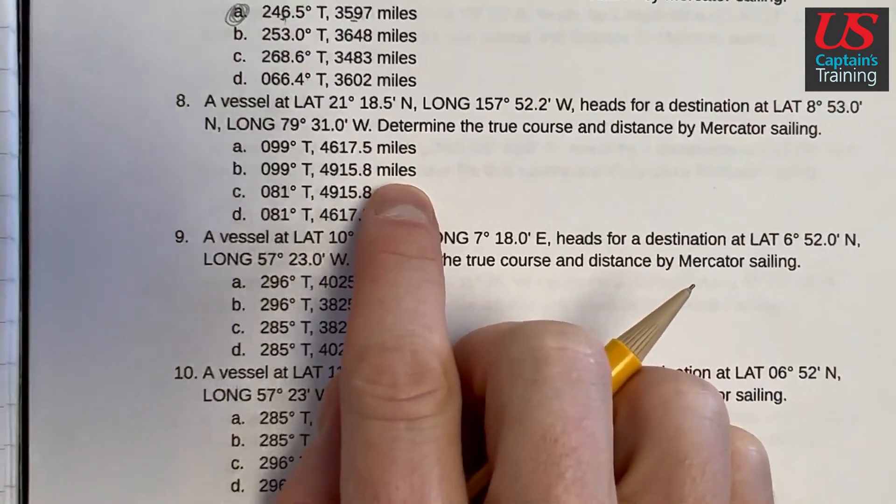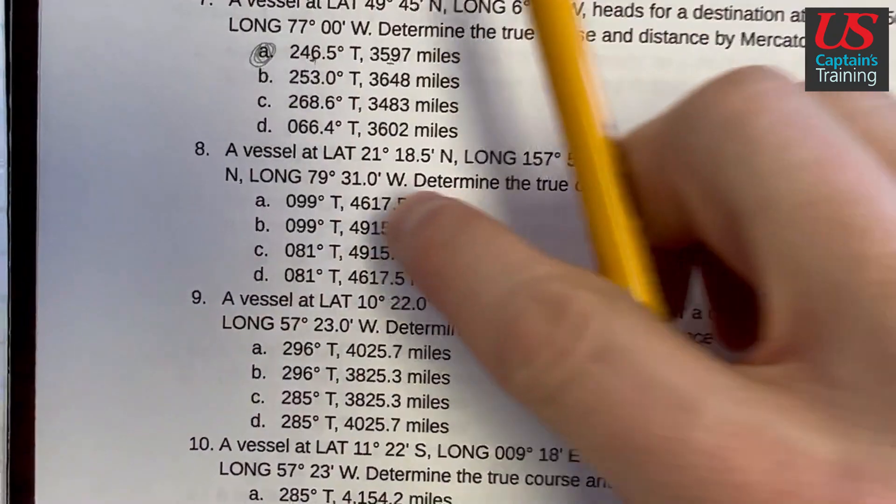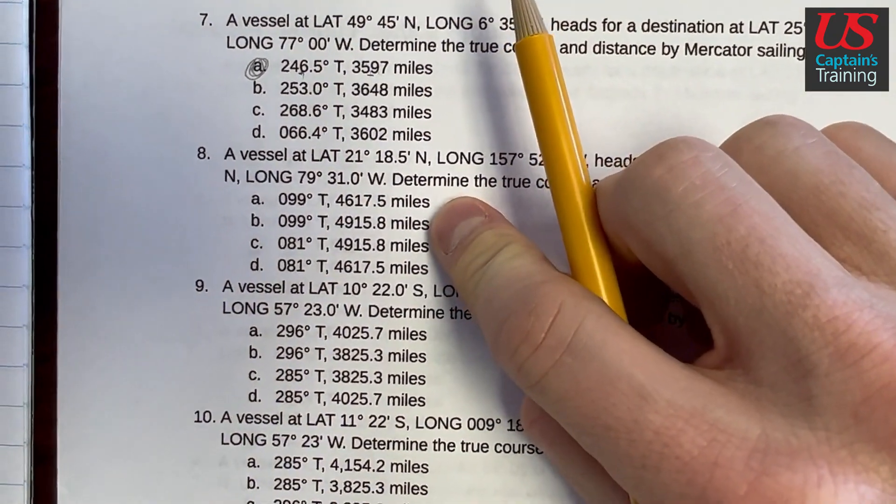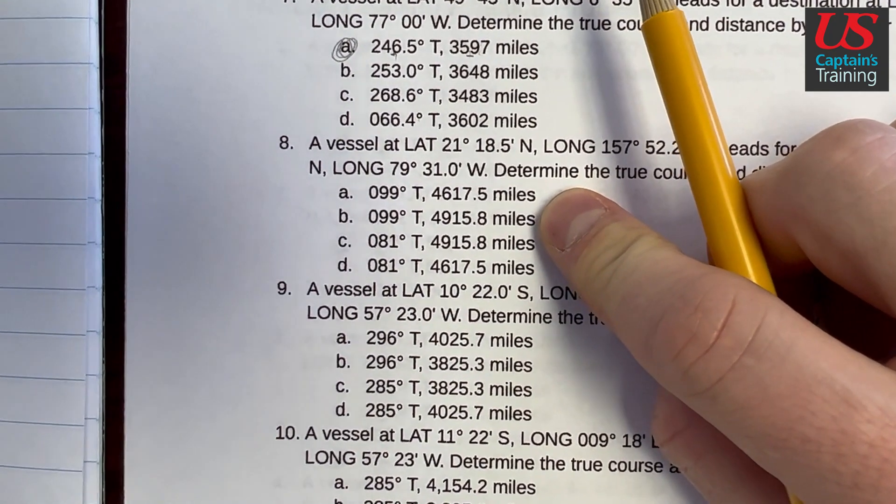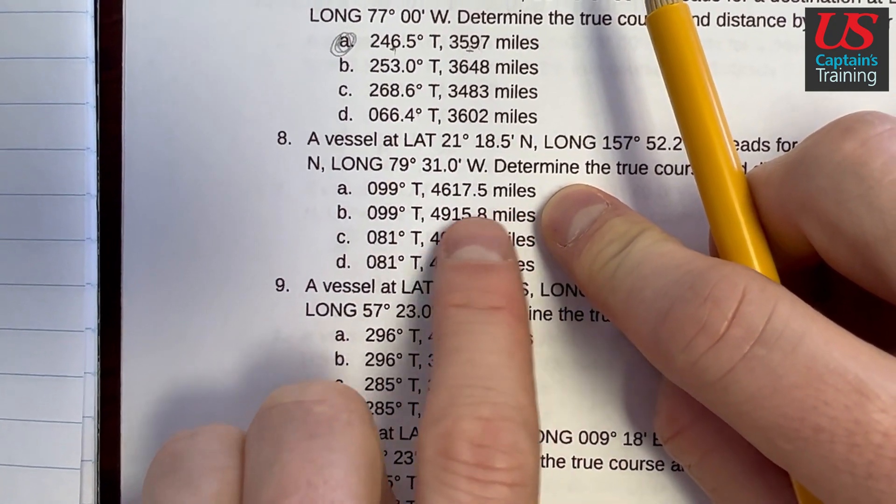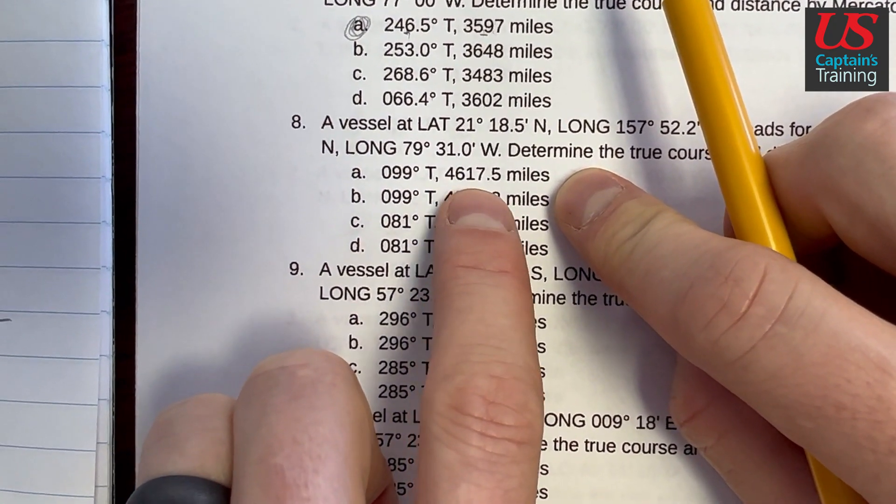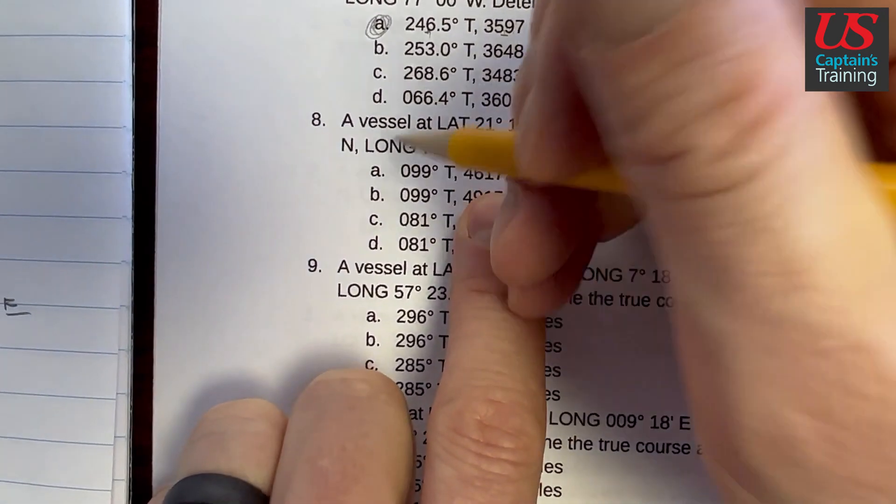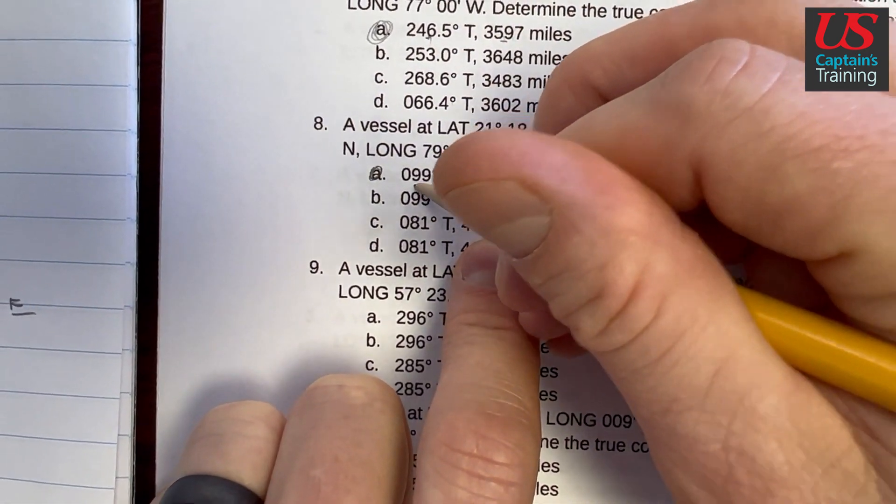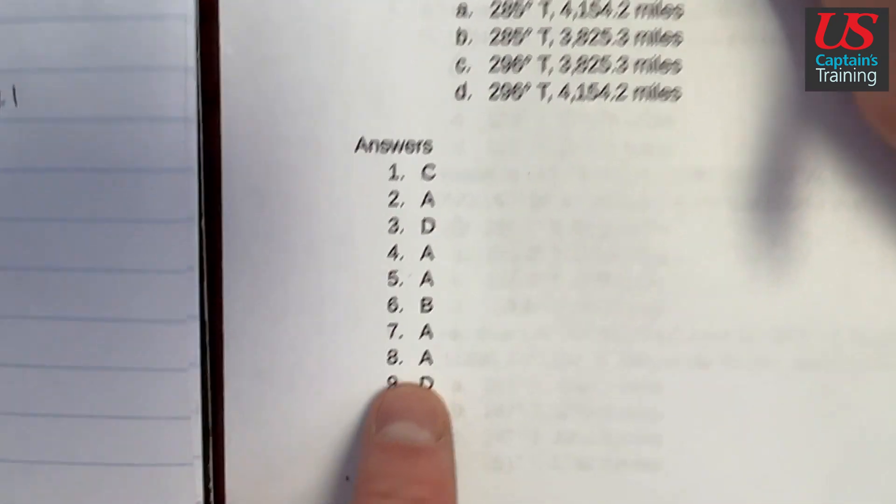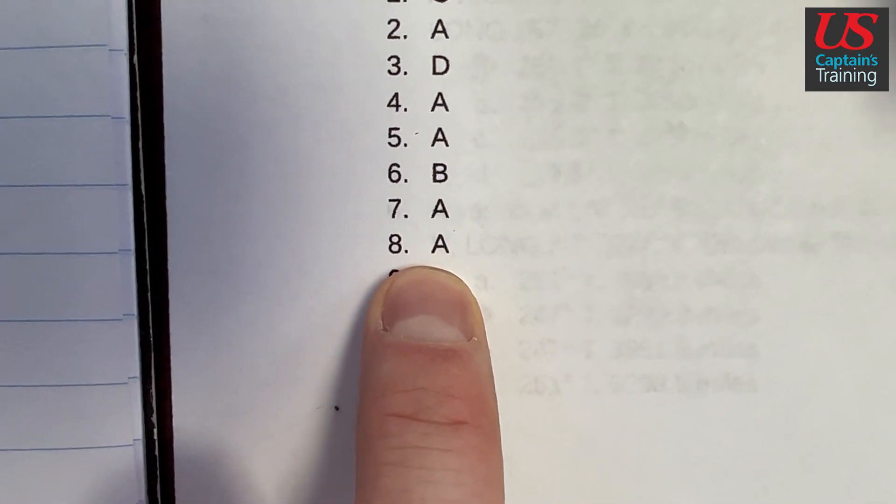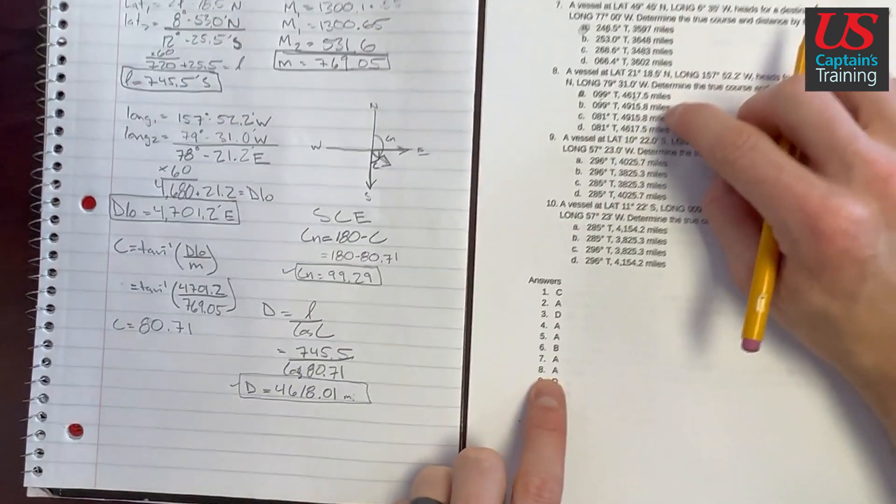So let's see if we got this. C_N is 99.29, we got two 99s, it's one of these two. And our distance is 46.18, 46, there we go 4617.5. That's pretty close to 4618. I'm guessing A, because we got this and we got really close here. Eight is A. Yeah, that's right. Eight is A. So that's Mercator Sailing Practice Problem Eight.